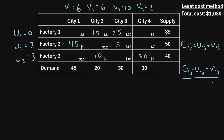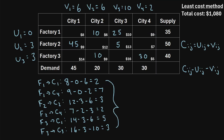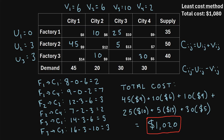We calculate the difference formula for each unallocated cell. Factory 1 to city 1: 8 minus 0 minus 6 equals 2. Factory 1 to city 4: 9 minus 0 minus 2 equals 7. After performing all the remaining calculations, we notice that none of the values are negative. That means we have arrived at the optimal solution. To find the total shipping cost, we take the units shipped times the unit shipping cost and add up all those values, which gives us a total shipping cost of $1,020 — less than the $1,080 from the least cost method. This is our optimal solution.